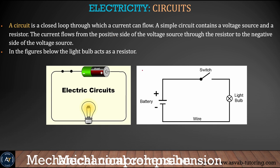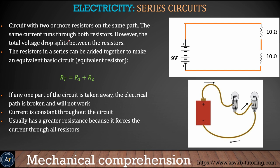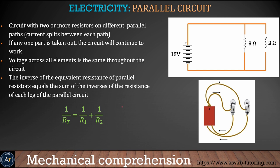Next we learn circuits. There are two main types: series and parallel. In a series circuit, components are connected in a line. The total resistance in a series circuit is RT = R1 + R2 — you add the resistances together. The test will ask you to identify whether a circuit is series or parallel.